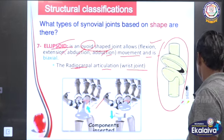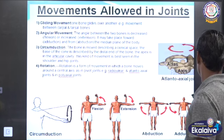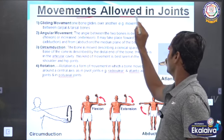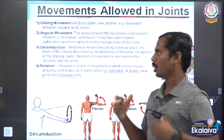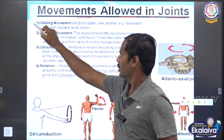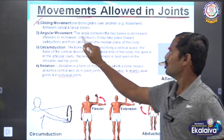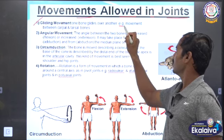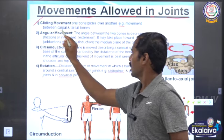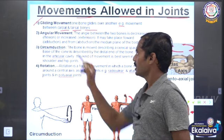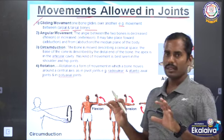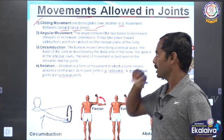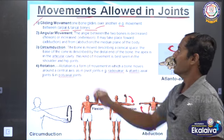Movements allowed in joints. Number one: gliding movement — one bone glides over another. Example: movement between the carpal and tarsal bones. This is called the gliding angular movement.